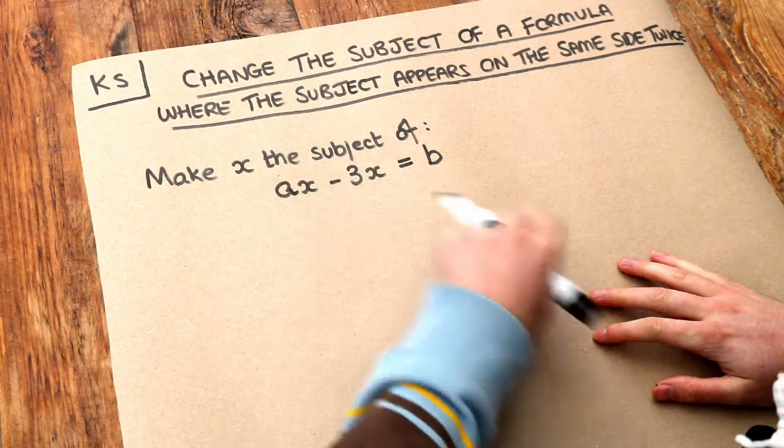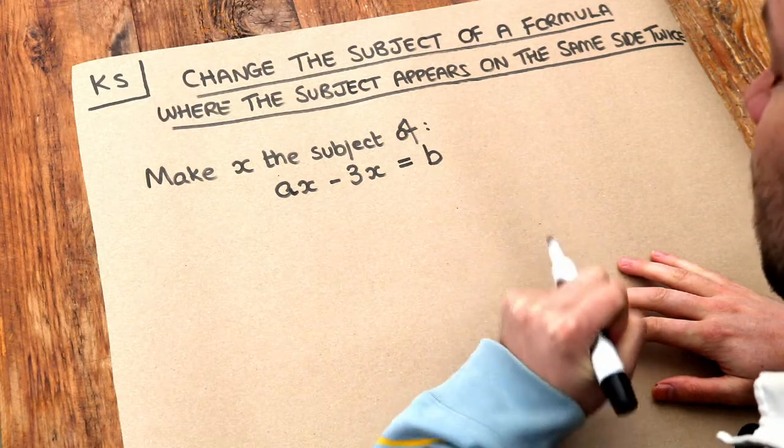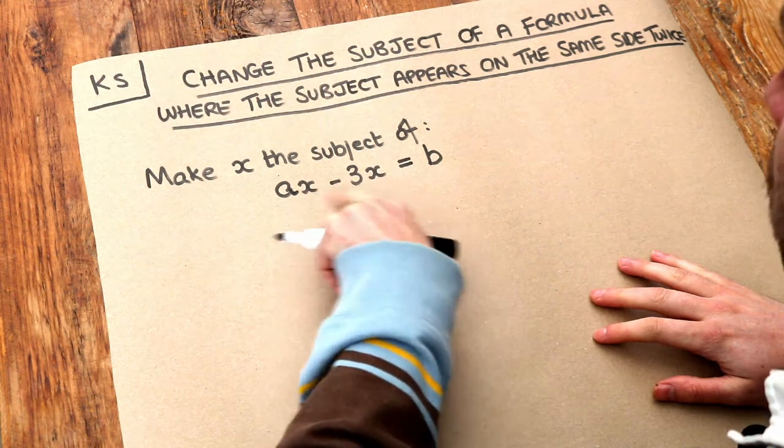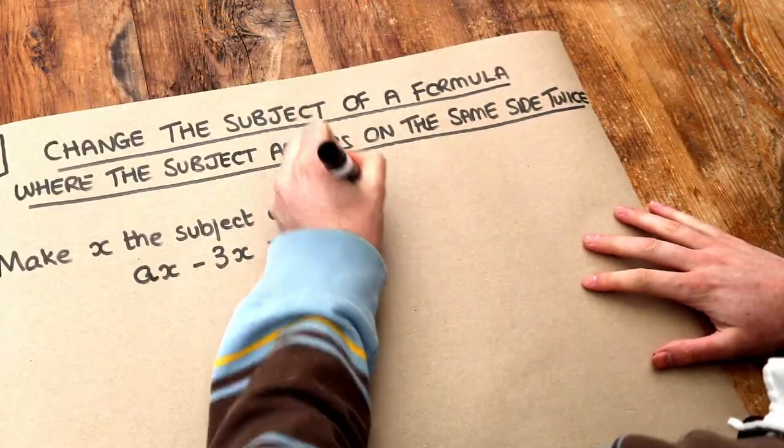If we want to make x the subject, that means we want to get x on its own on one side of the equation only. Now if the x appears multiple times, then we have this strategy here.